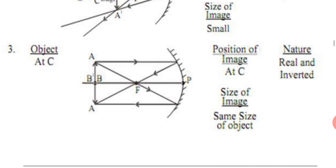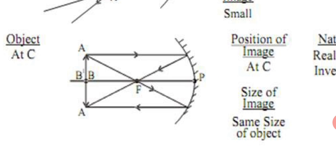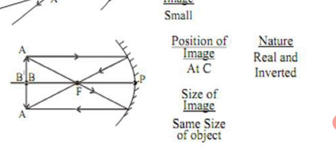Now we talk about third situation: when object is placed on C. When object is placed at center of curvature, according to rules, reflected rays go through focus and meet. Position of image is also at C, size of image will be same size, and nature real and inverted - image B dash A dash.